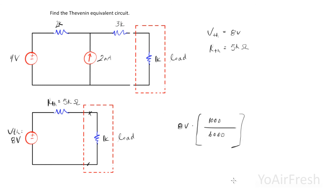So we'd have 8 volts times 1 over 6. And that would give us 8 over 6, or 4 over 3 volts across the load.